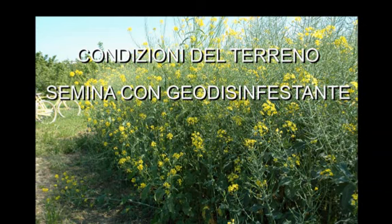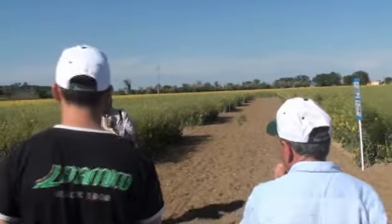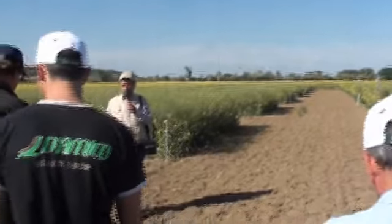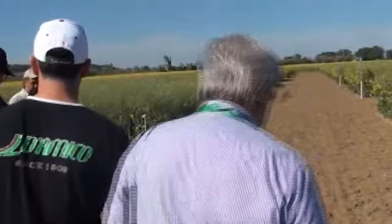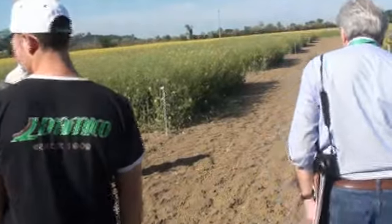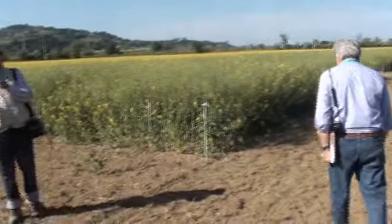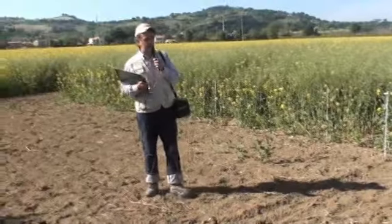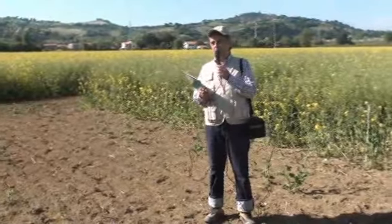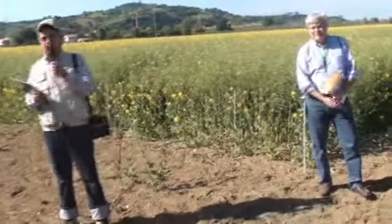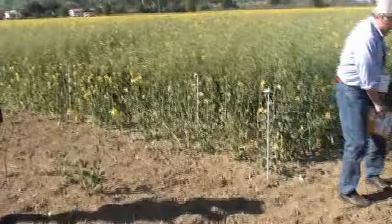We are talking about the 4th of October. Seedbed preparation, as you heard, is fundamental. It is not particularly demanding, but one of the key requirements is the moment of sowing. Sowing depth should be 1–2 cm — not deep — and it requires, or at least greatly benefits from, a fine seedbed preparation.